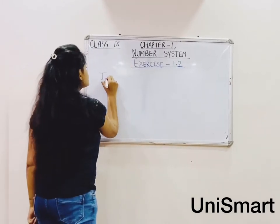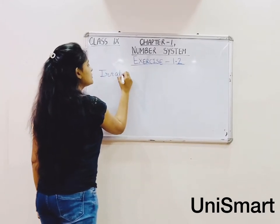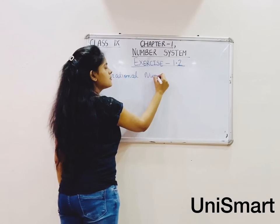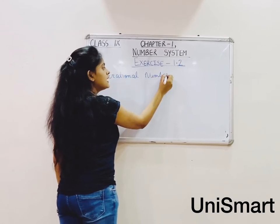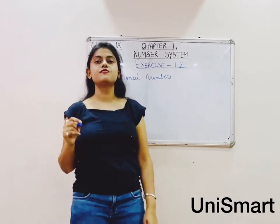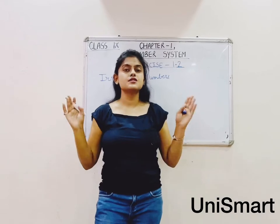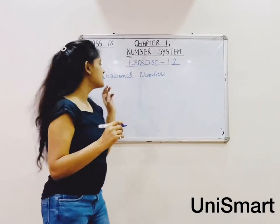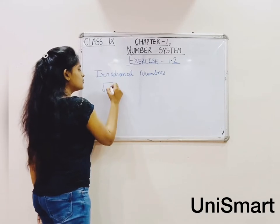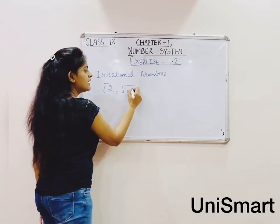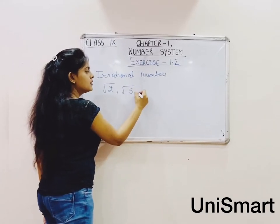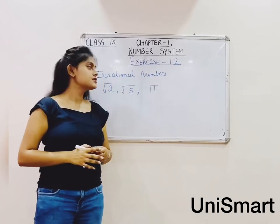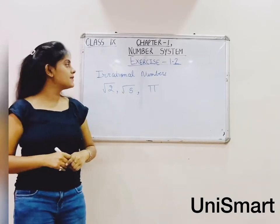So first we will see what irrational numbers are. Irrational numbers are those numbers that cannot be written in the form of p by q. Irrational numbers are not represented in the p/q form. Examples include root 2, root 5, and pi — these are irrational numbers.